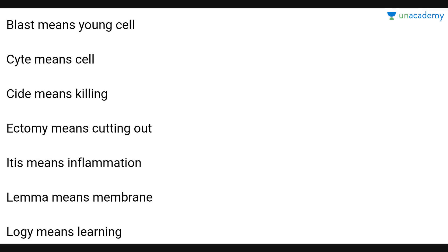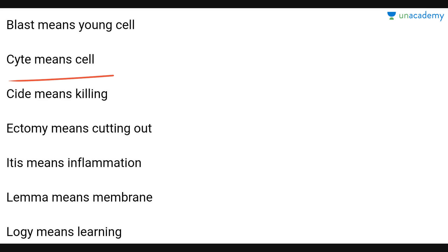As I already taught you the prefixes of biology, now I'll take you to the suffixes. Let's start: 'blast' means young cell, like blastocytes, blastomers. '-cyte' means shell or cell, like karyocytes — karyo means cytoplasmic but -cyte means cell. '-cide' means killing, like in faticides.